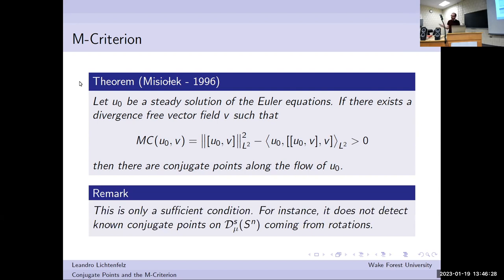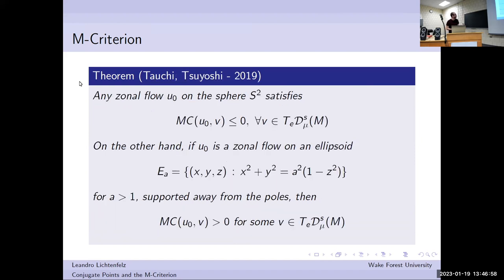This is only a sufficient condition. We know examples — for instance the 1993 ones related to rotations on the sphere — where we know all the conjugate points, but they are not picked up by this criterion. There have been recent efforts to understand when exactly this gives conjugate points and why it fails in other situations. Very recently, Tauchi and Tsuyoshi — I think the paper first appeared in 2019 — did calculations on the two-sphere for zonal flows and showed that for the round two-sphere with a zonal flow initial condition, this criterion will not tell you anything — it's always non-positive.